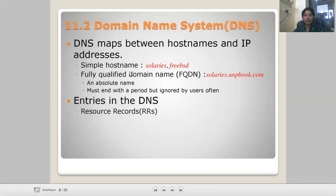There is a simple host name, like 'solaris3BSD', and a fully qualified domain name (FQDN), like 'solaris.unbook.com'. One form is absolute and must end with a period, and it is removed by the usual resolver. These are entries in the DNS.